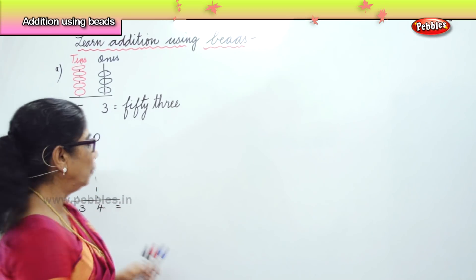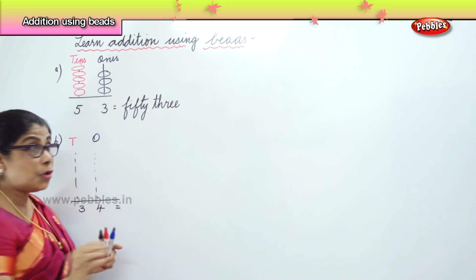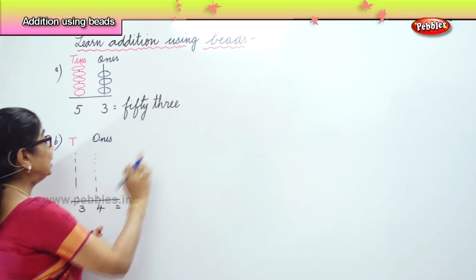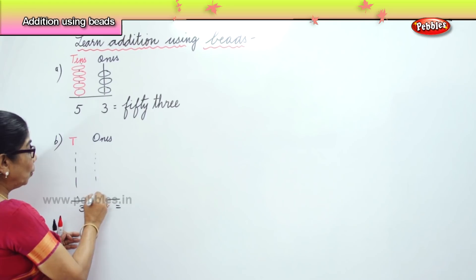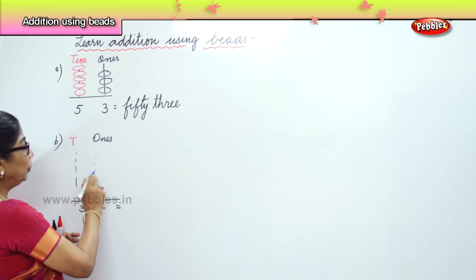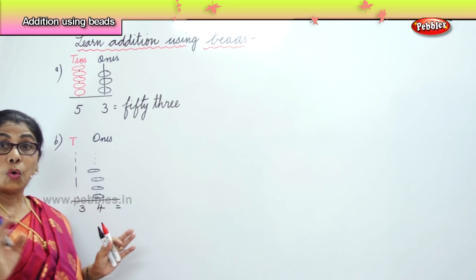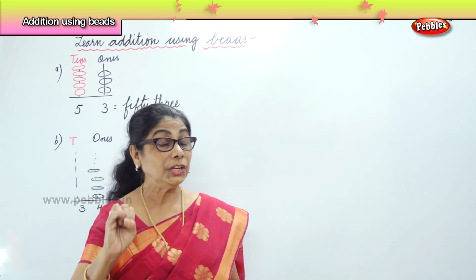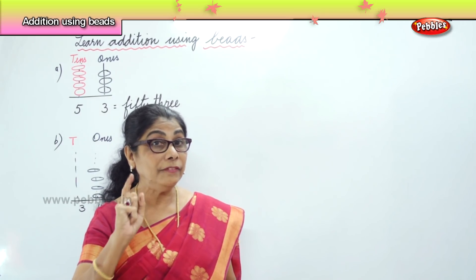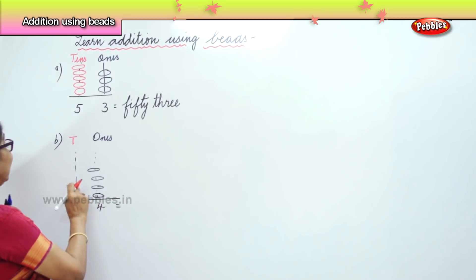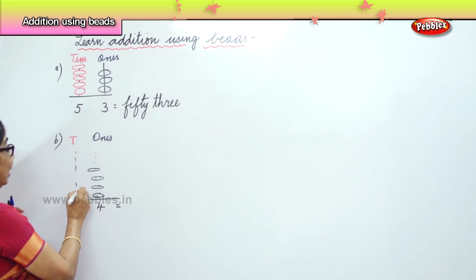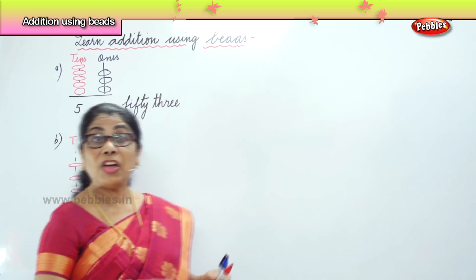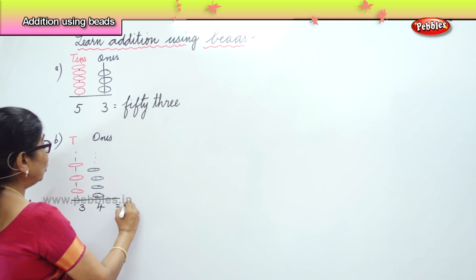Remember, we have here 4. What is the meaning of 4? 4 ones. So, I will put in how many beads? 4 single beads: 1, 2, 3, and 4. That is 4 ones. Now, how many in the tens place? You have 3. 10, 20, 30. Every bead is 10. So how many beads? I am going to insert here: 3 — 10, 2 — 10, and 3 — 10. I have 3 tens. 30 plus 4 is 34.